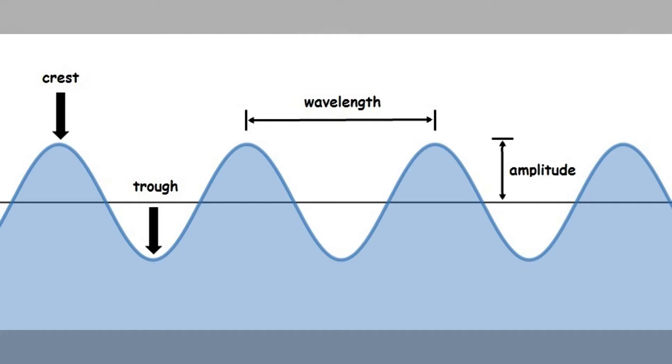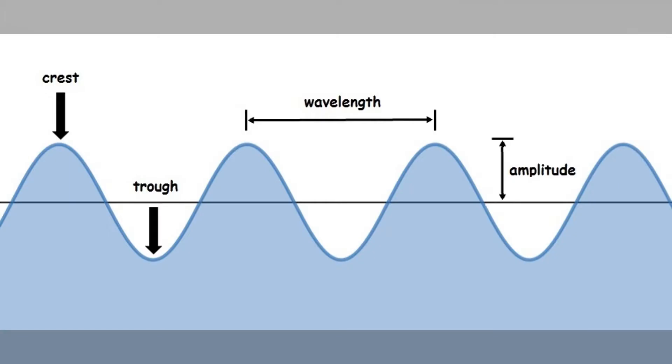The middle of a wave we sometimes call sea level, especially if we're talking about water. That's like the resting place — where the level would be if there wasn't a wave going up and down. The distance between two crests, or two troughs, is the wavelength. The distance from one wave to the next at the same point — one crest to the next crest — is the wavelength.